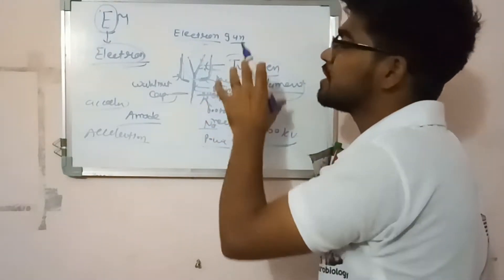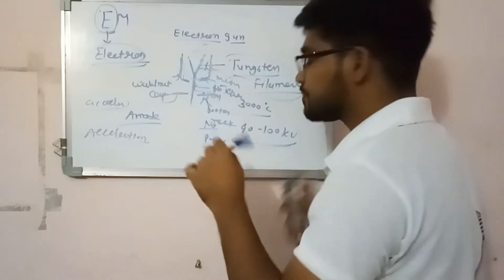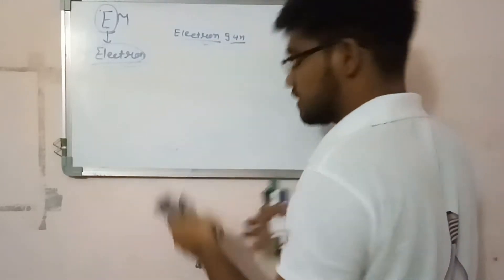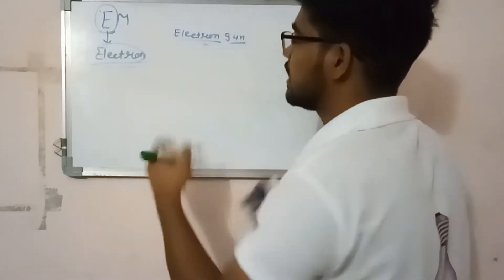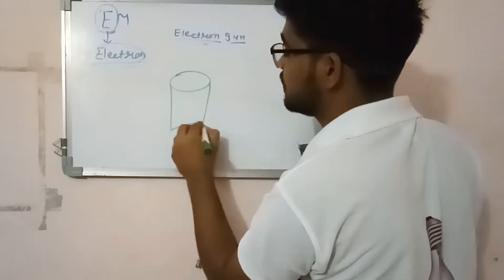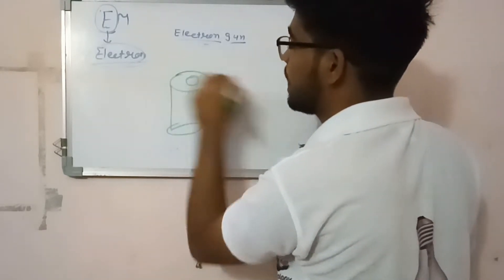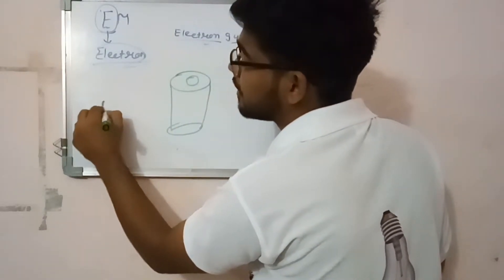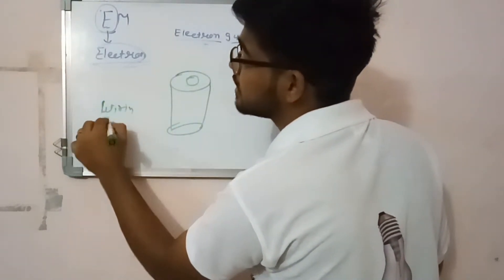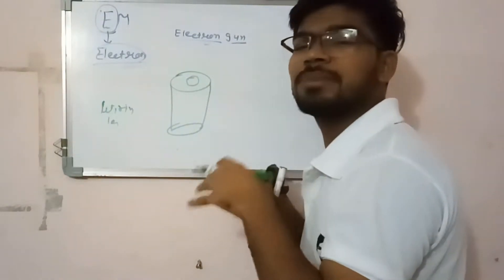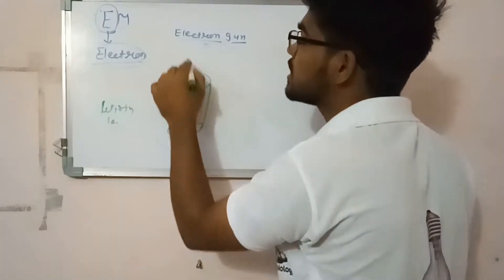By thermionic emission we get electrons. The second difference is electromagnetic lenses. The lenses have a small opening and are made of wiring. Because the source of radiation is electrons, simple glasses cannot be used, so we use electromagnetic lenses.